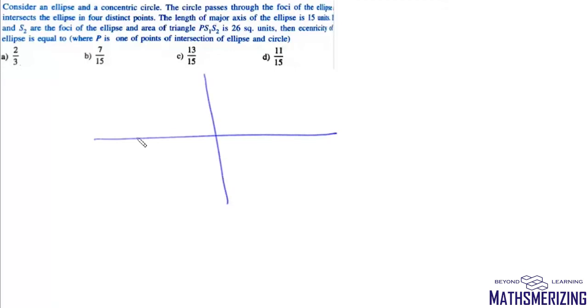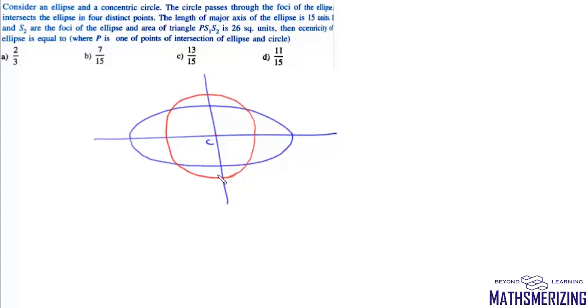Next question: consider an ellipse and a concentric circle. The circle passes through the foci of the ellipse and intersects the ellipse at four distinct points. The length of the major axis is 15 units. If S1 and S2 are the foci and area of triangle PS1S2 is 26 square units, find the eccentricity of the ellipse.